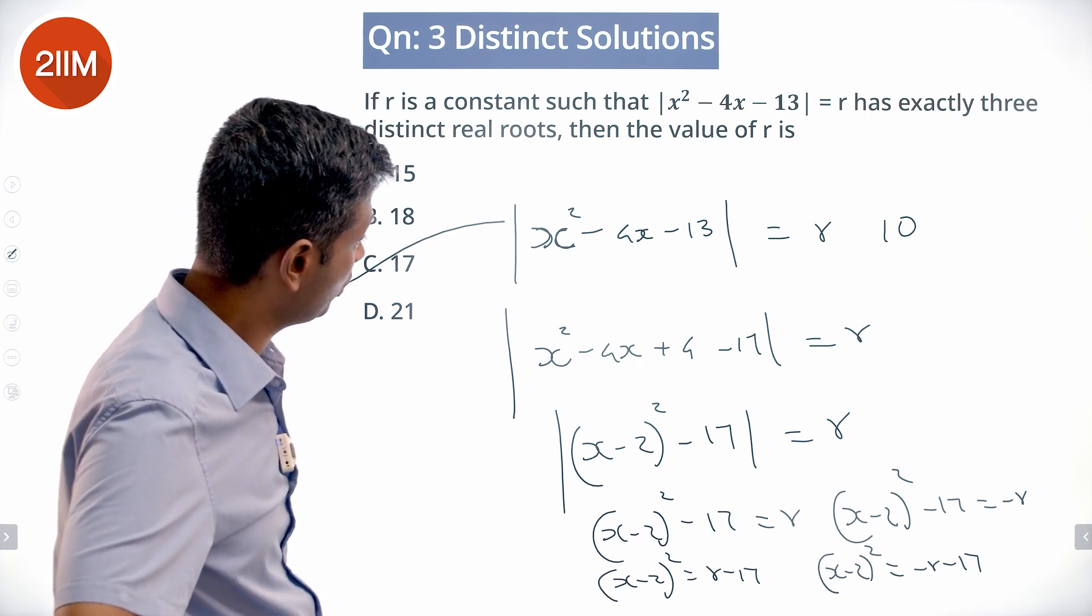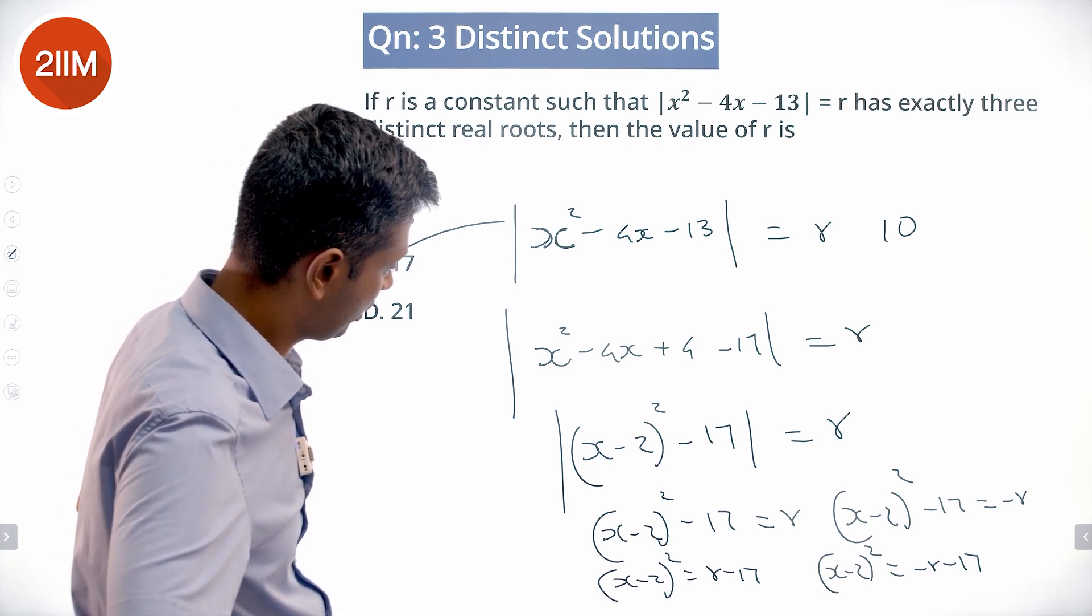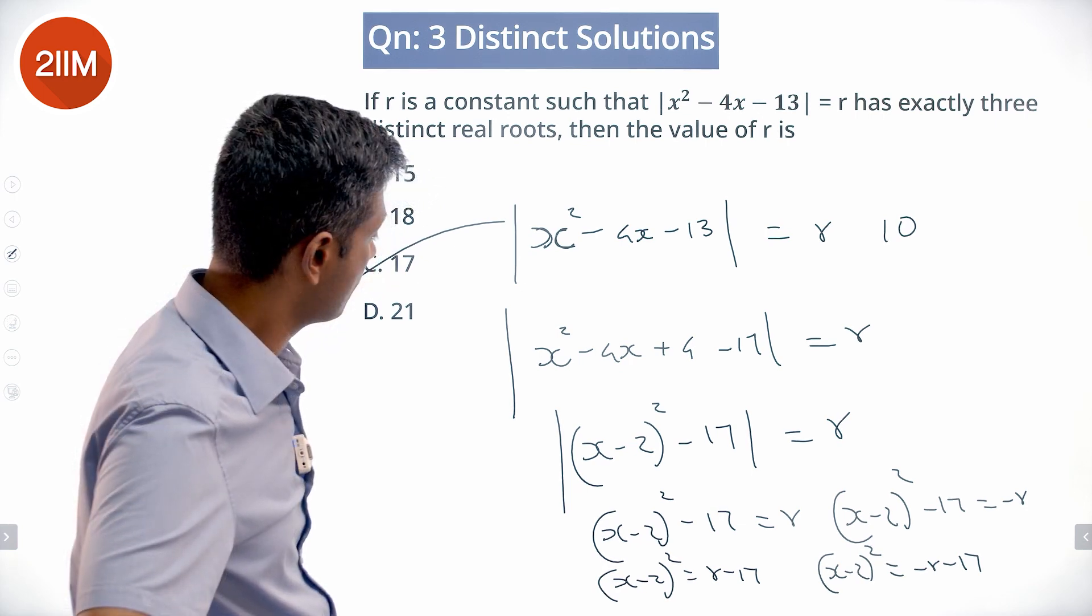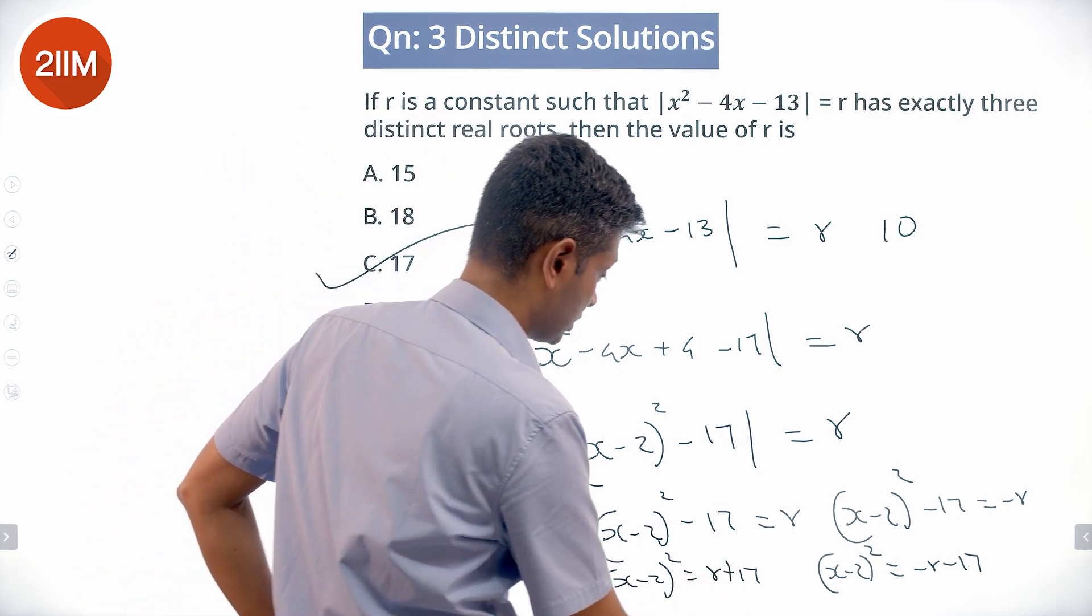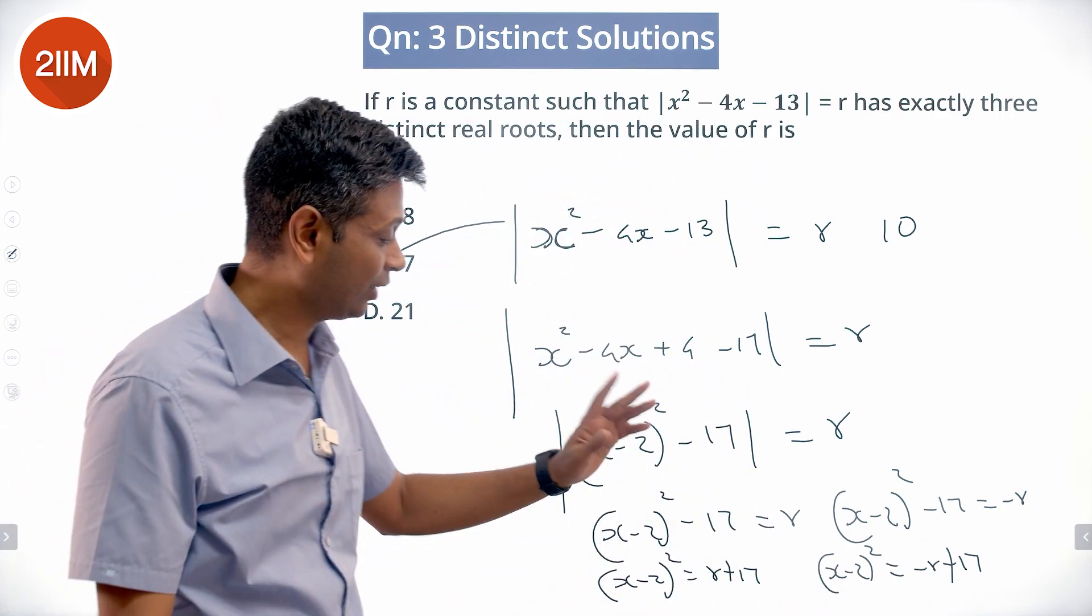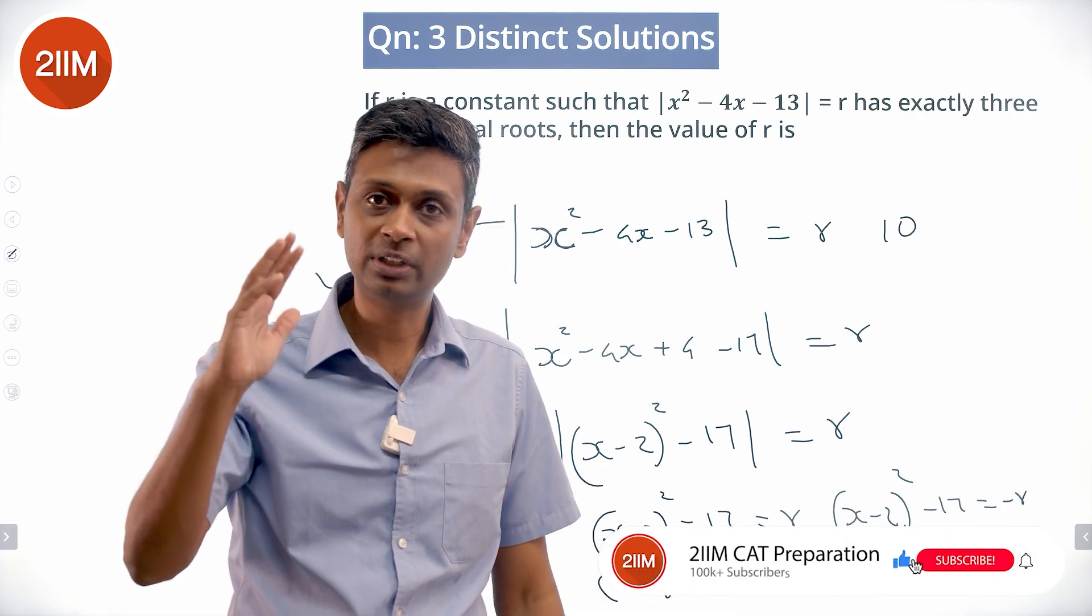Is there a scenario where this goes to -17 at all? (x - 2)² - 17 = -17. It should be -r + 17. r = 17 works. r = -17 also works. One of those will give two roots, the other will take care of itself.